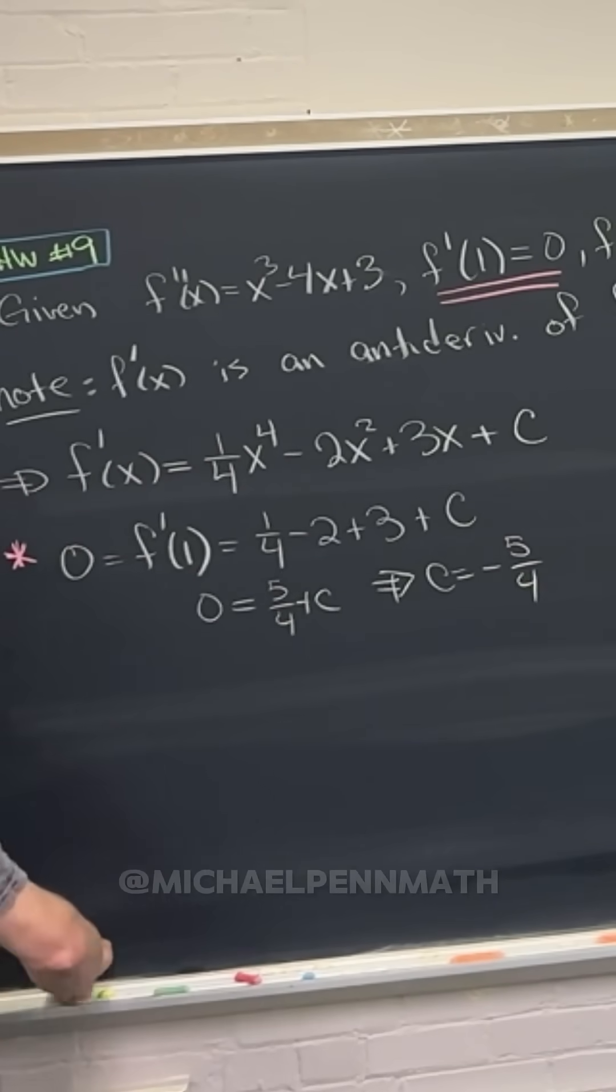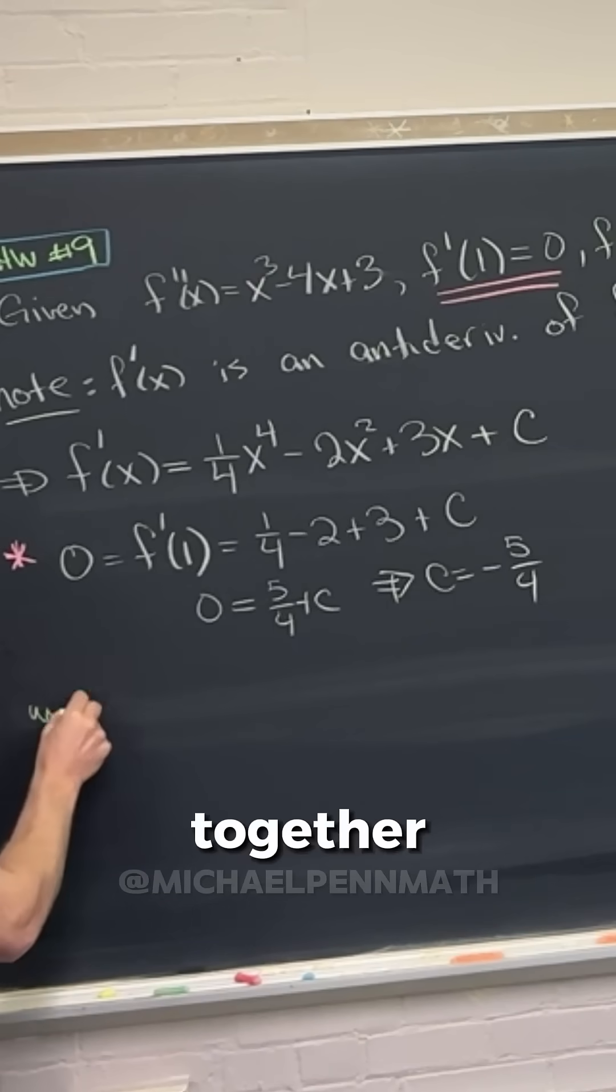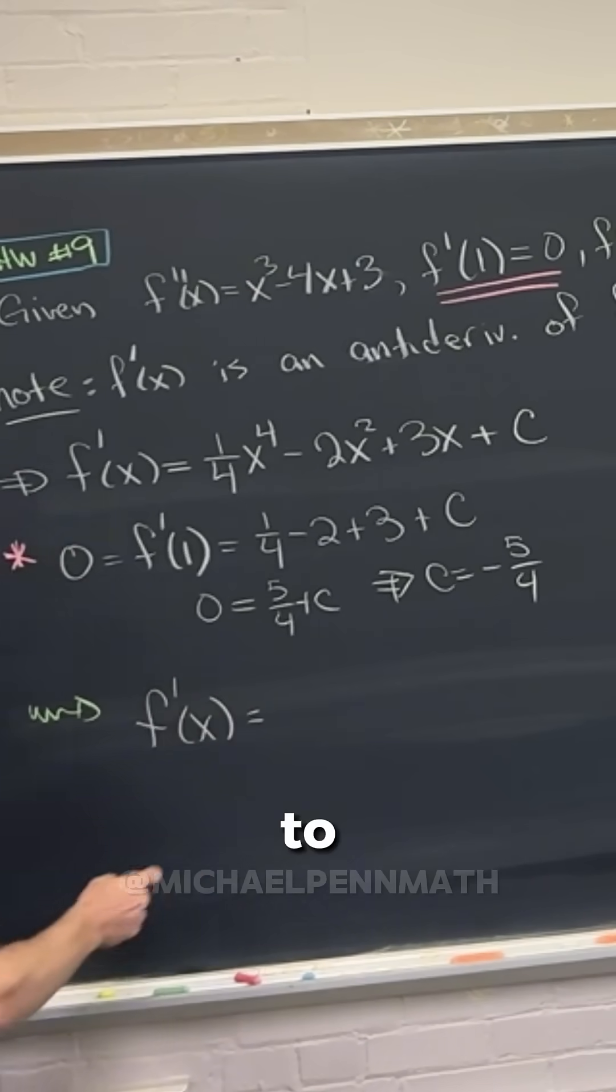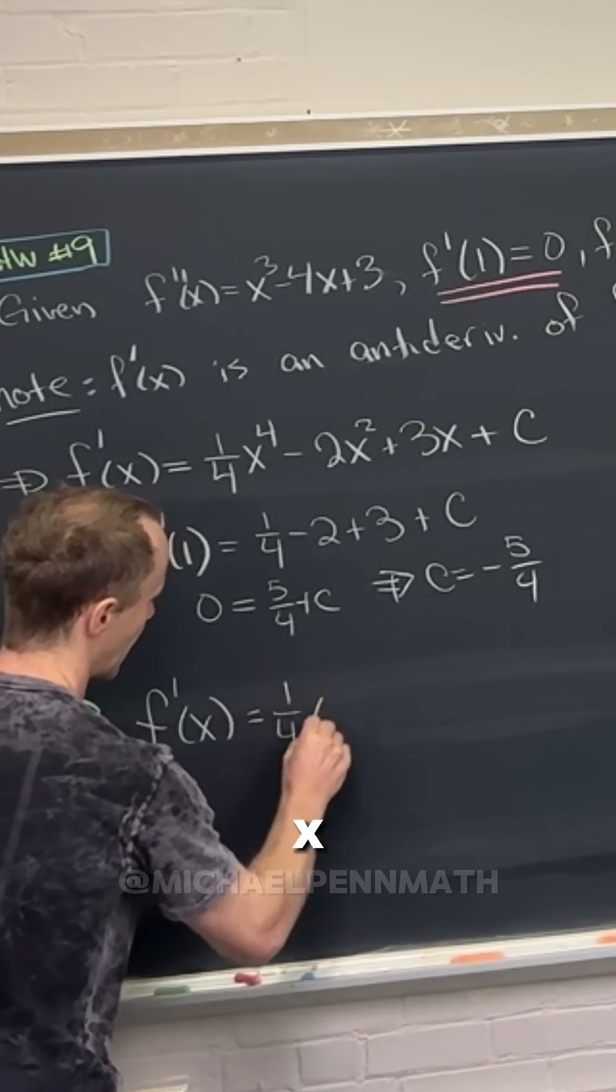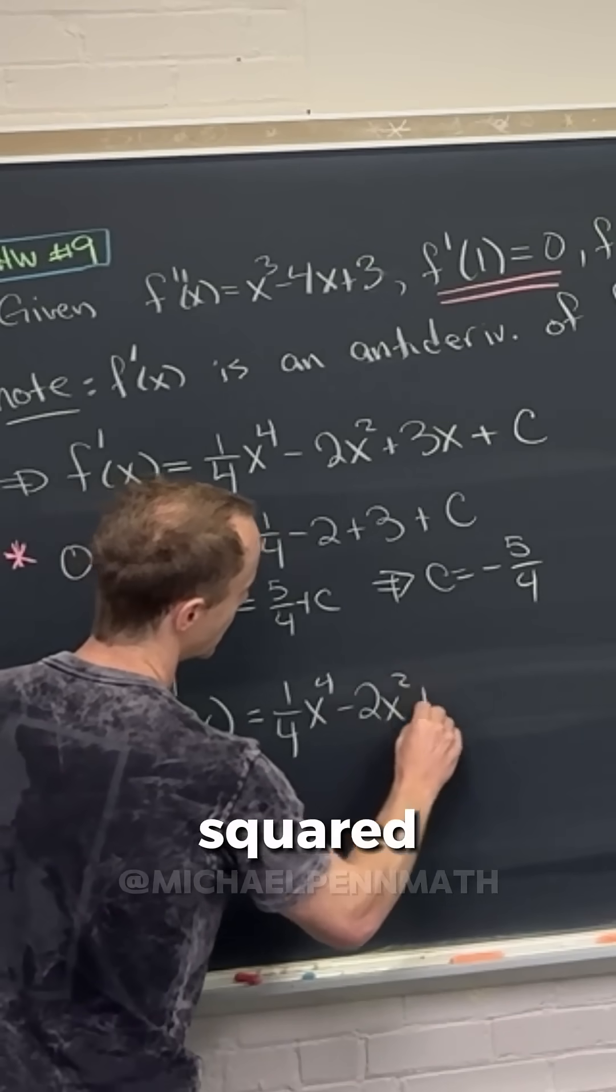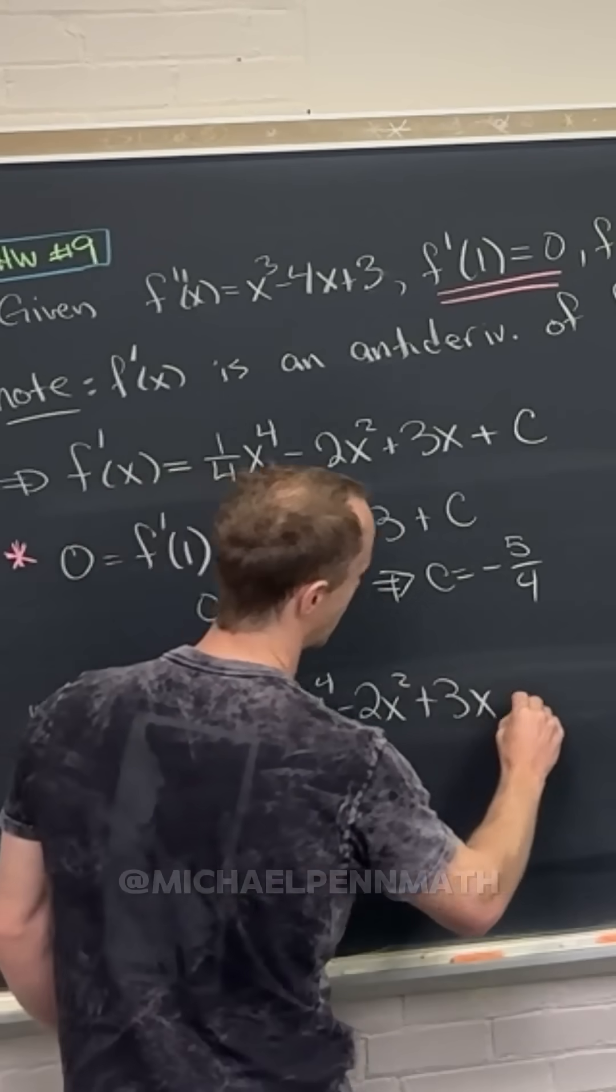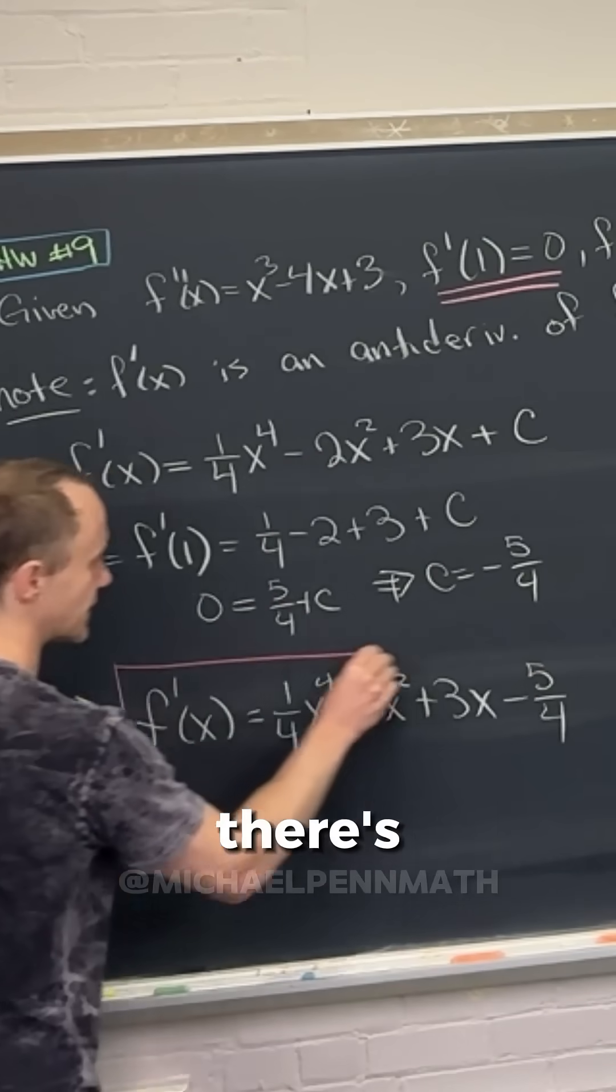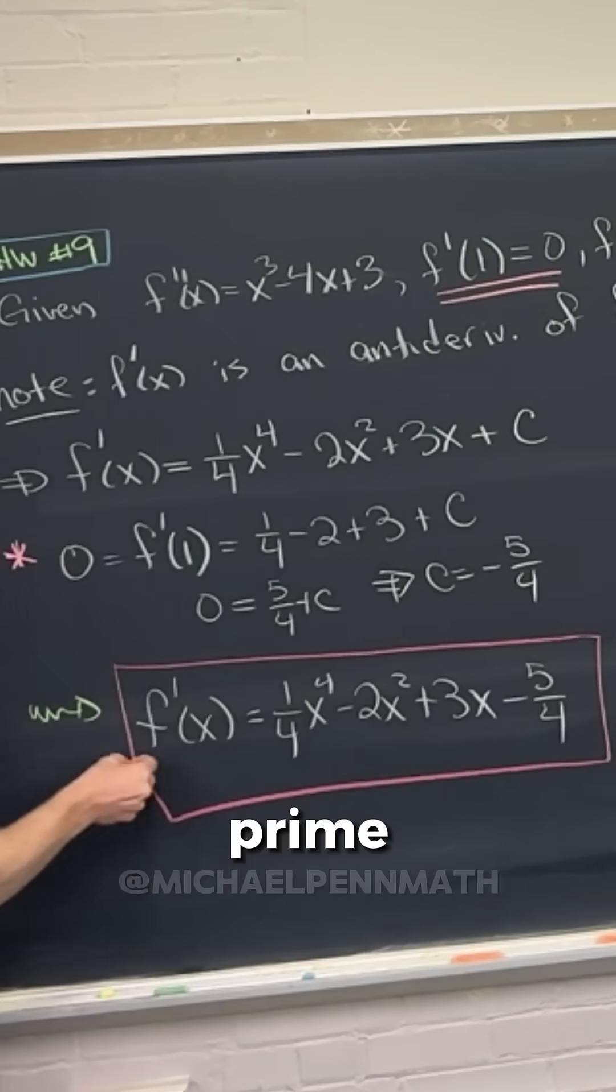Putting this all together, we see that f prime of x is equal to a quarter x to the fourth minus two x squared plus three x minus five over four. There's where we are for our f prime function.